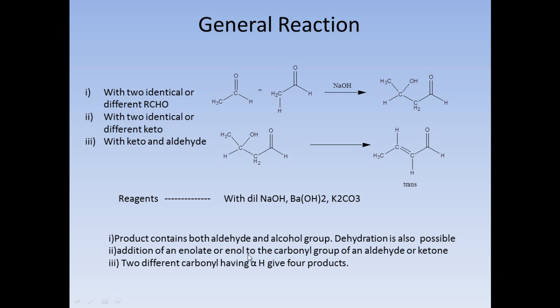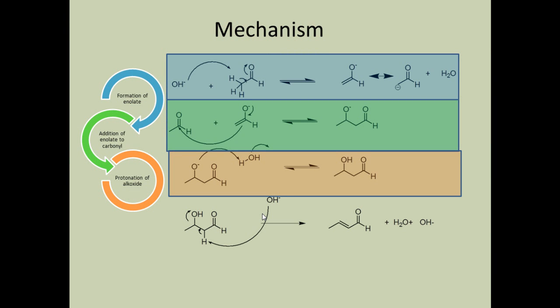This reaction is mainly the addition of the enolate or enol to the carbonyl. This is why it is called an aldol reaction — the product contains both aldehyde and alcohol groups, and dehydration is also possible. When two different carbonyls each having alpha-hydrogens undergo cross-condensation, four possible products can form. We can eliminate unwanted products by using one molecule that has no alpha-hydrogens.